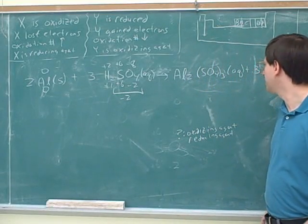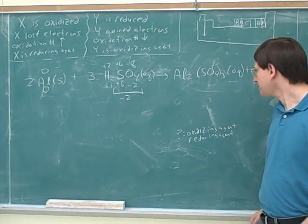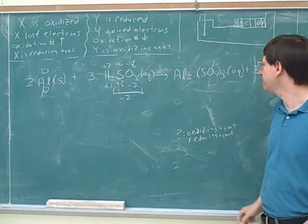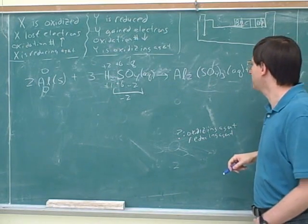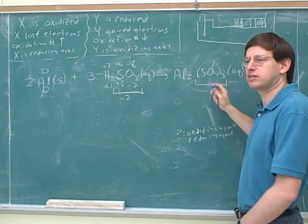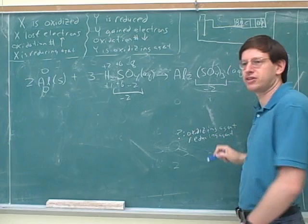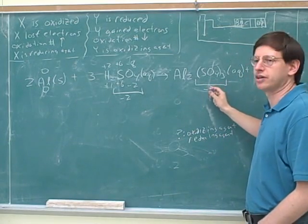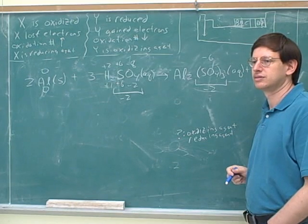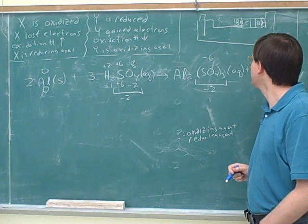Alright, so going back to this compound now, what would be the charges in this case? This one's a little bit harder. Maybe the easiest way to go through this is to just treat these as sulfates. These are sulfates. What's the charge in each sulfate? Negative 2. So what's the overall charge on the sulfates? Negative 6.